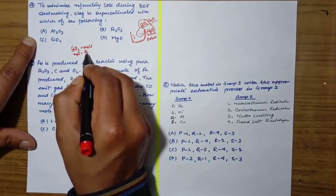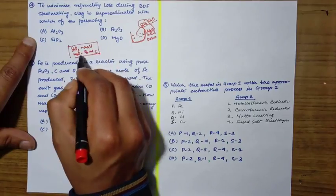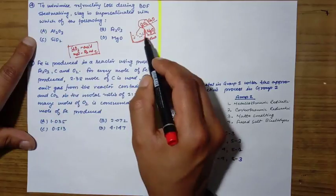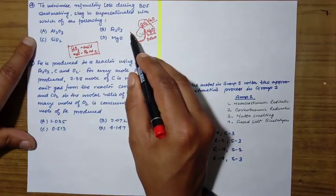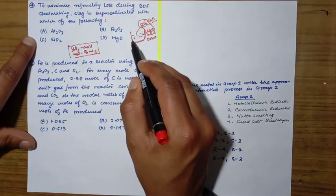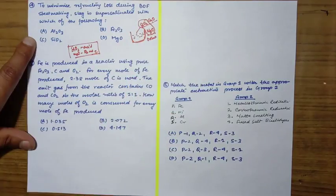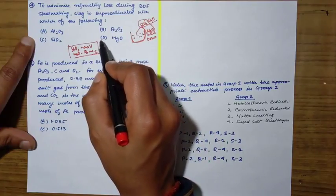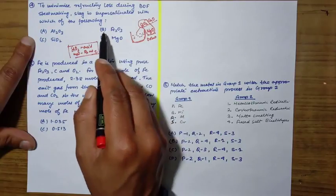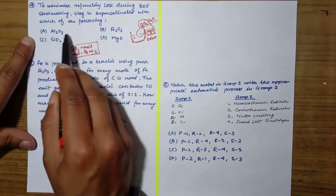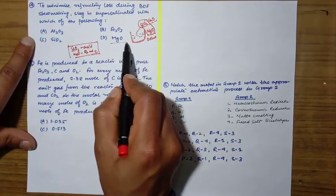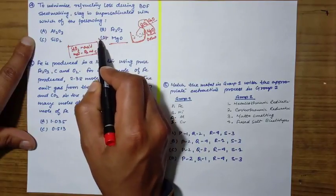There is a huge tendency for SiO2 to react with MgO because SiO2 is acidic and MgO is basic. So there will be chances of reaction that will corrode the surface. If we supersaturate with MgO, then this reaction tendency will decrease. The correct answer is MgO.